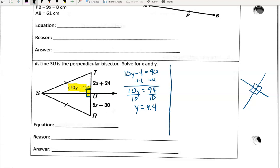Let's solve for X. Since SU is a perpendicular bisector, I know that it also bisects TR. So I know that this segment is going to be congruent to that segment, which means that I need to find some value of X so that these are equal to each other. So 5X minus 30 has to equal 2X plus 24. I'll subtract 2X from both sides. So I get 3X minus 30 is equal to 24.